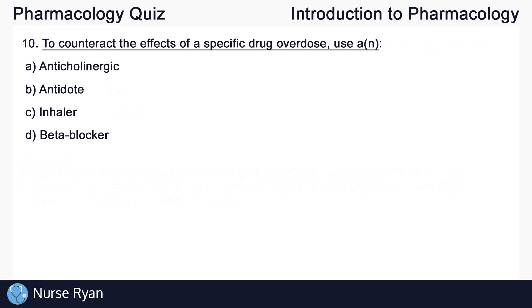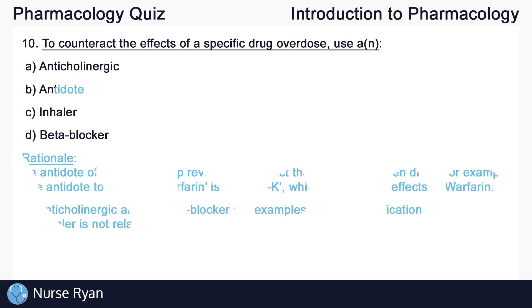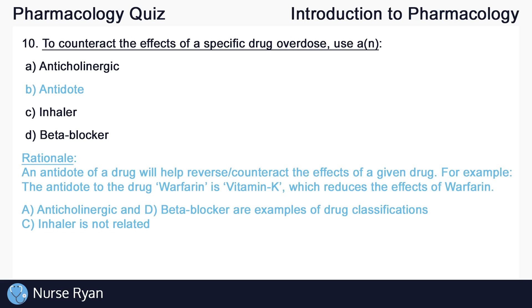Question number 10: To counteract the effects of a specific drug overdose, use — and the answer here is B — an antidote. An antidote will help reverse or counteract the effects of a given drug. For example, the antidote to the drug warfarin is vitamin K, which reduces the effects of warfarin. Anticholinergic and beta blocker are examples of drug classifications, and inhaler is not related.